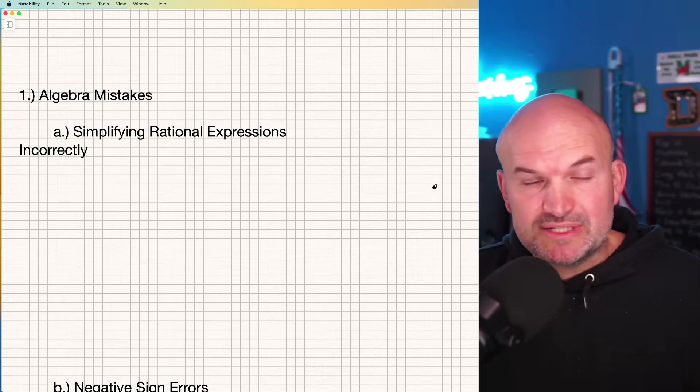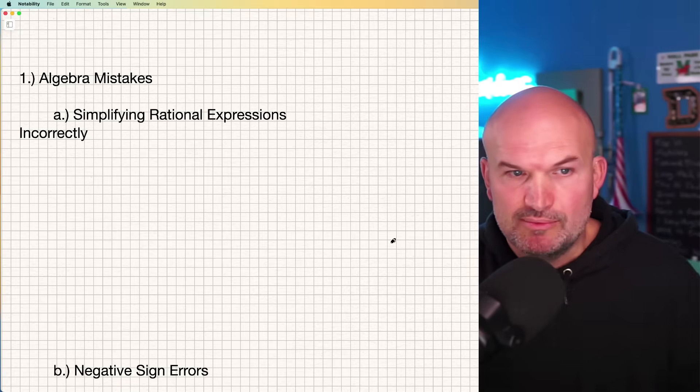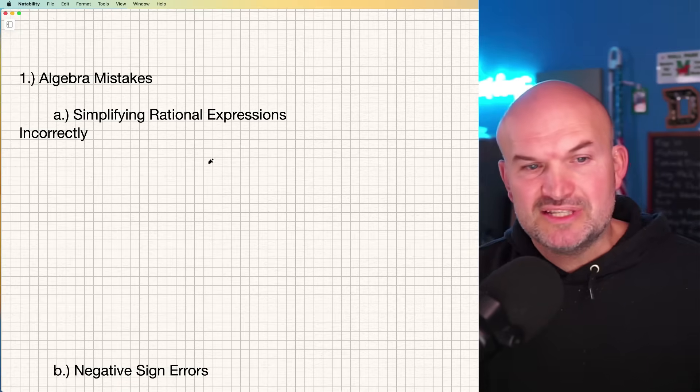So let's go into some algebra mistakes to start off. The first one is simplifying rational expressions incorrectly. Now, I understand